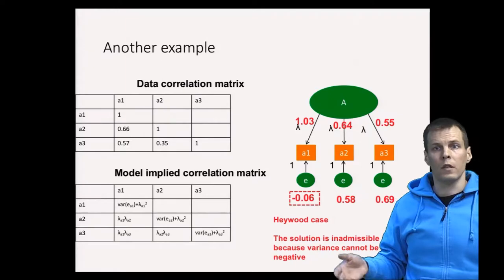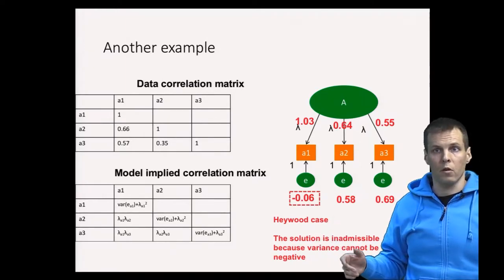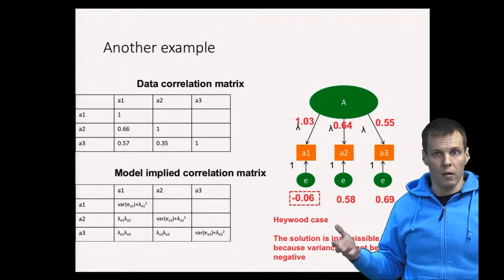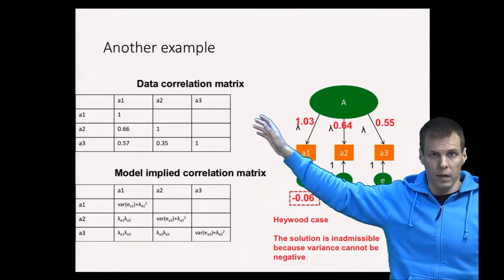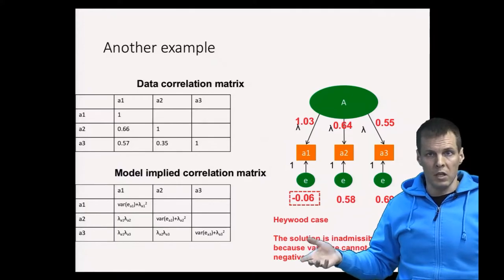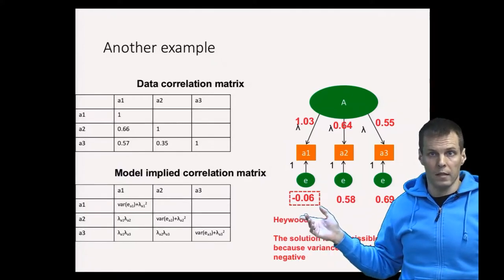It occurs in this case because of sampling errors. So the correlations here are never exactly at the population values and sometimes it happens that we'll get negative estimates.